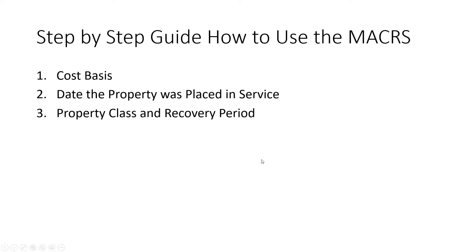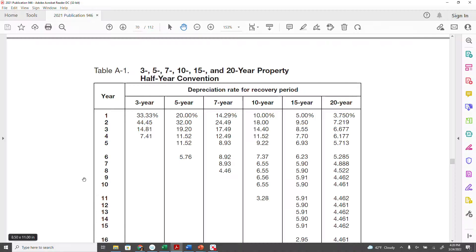The third step is the property class. Not every property depreciates the same. Vehicles usually depreciate over five years. However, things like a sewer system can depreciate over 20 years. There is a table you can use in these IRS documents.